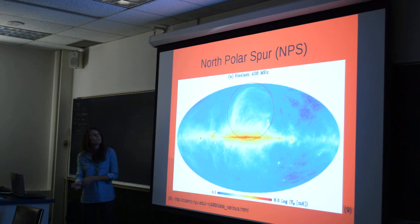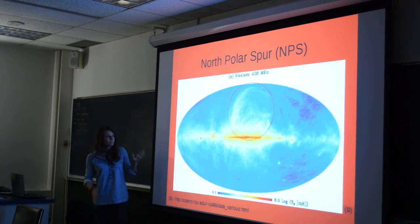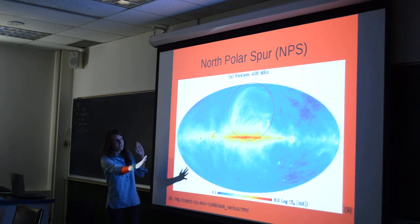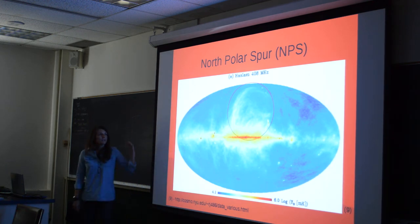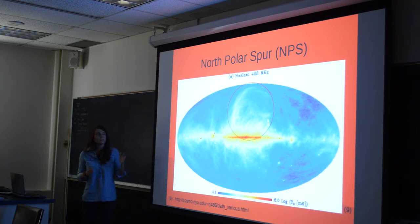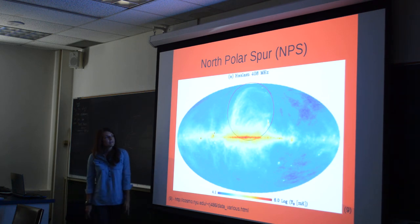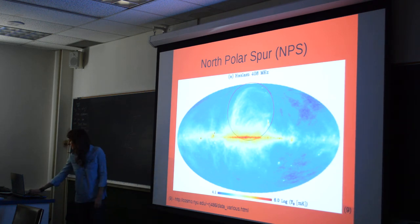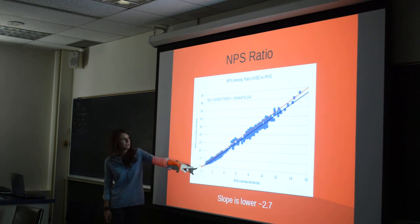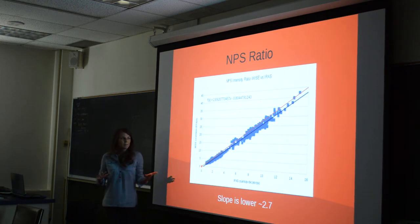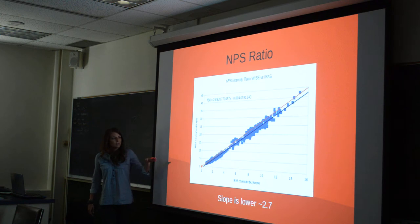The first supernova remnant we looked at was the North Polar Spur. This all-sky map shows how big that feature is, so we used three different 10-by-10-degree tiles to evaluate it. What we found is that the ratio of PAHs to larger grains is only slightly smaller — this red line represents the 2.8 slope we expect. But if any PAHs were destroyed, it wasn't many, according to this data.